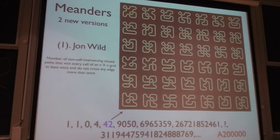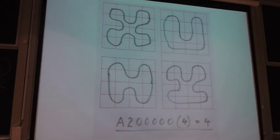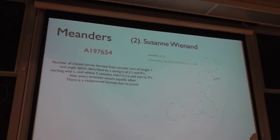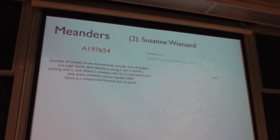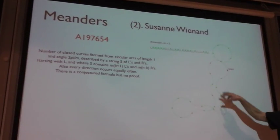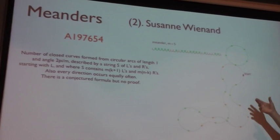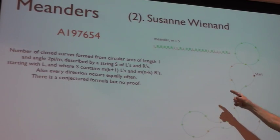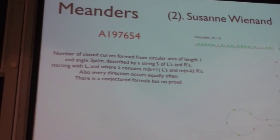Nice picture, nice question. Another meander type sequence was sent in by Susanna Wienand and I won't do any more than show you a picture. This is an example. She has a conjectured formula for it which I think should be provable but it hasn't been proved yet.